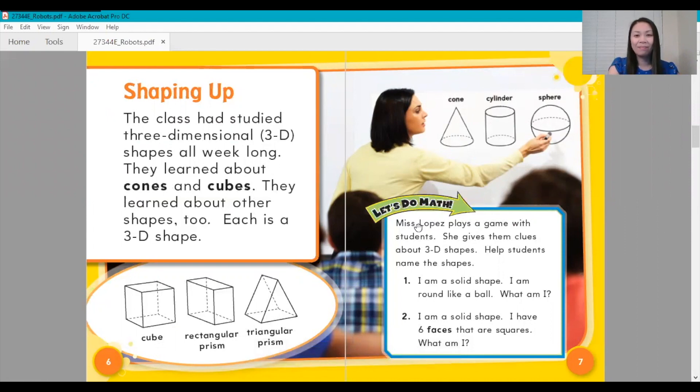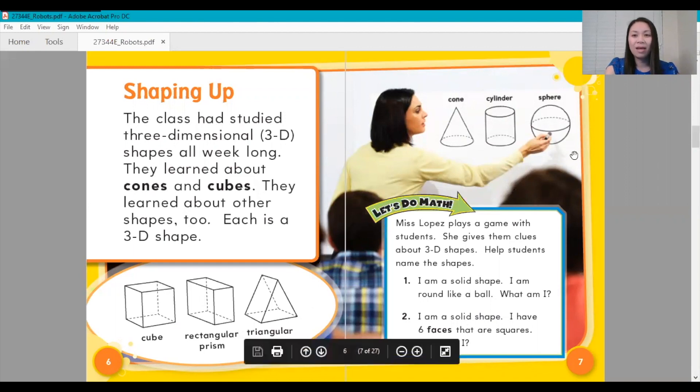Let's do some math. Ms. Lopez plays a game with students. She gives them clues about 3D shapes. Help students name the shapes. Number one: I am a solid shape. I am round like a ball. What am I? Did you guess sphere? You're correct.